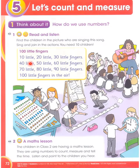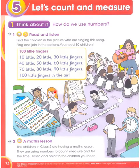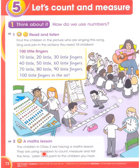Ten little fingers — aapki do haathon ki jo fingers hain. Now we go to a math lesson. The children in class two are having a math lesson. They are using numbers to count, measure, and tell the time. Listen and point to the children you hear. Numbers use karo counting karne ke liye, measure karne ke liye, aur time batane ke liye.